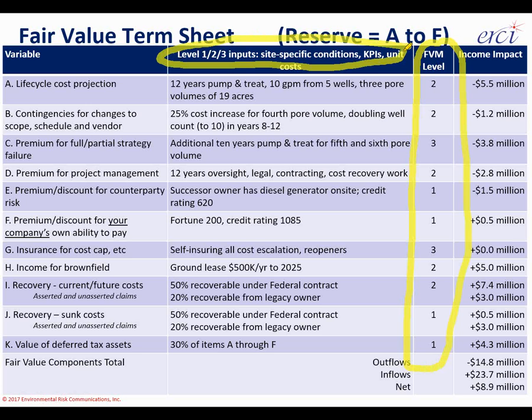Starting with the life cycle cost projection, explicitly state: we expect 12 years of groundwater pump-and-treat, pumping 10 gallons per minute from five groundwater extraction wells, pumping out three pore volumes of a 19-acre space. We also include contingencies for changes to scope, schedule, and vendor — in this case, a 25% cost increase for pulling out a fourth pore volume and doubling the well count in years 8 to 10 from five to ten wells. Other items in a fair value term sheet include premiums for full and partial strategies, a premium for internal project management, and a premium or discount for counterparty risk, offset by your company's own ability to pay.